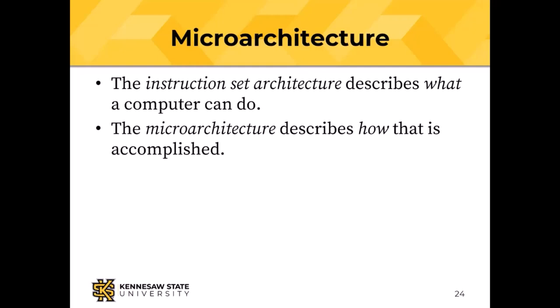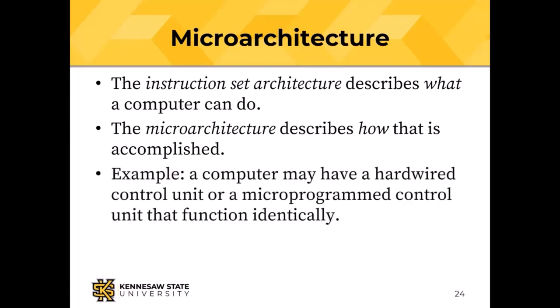Given a particular instruction set architecture, it is highly possible that it could be accomplished in more than one way. For example, there are two ways to design a control unit: one is hardwired — we build out of gates something that takes the bits of the operation code and generates the necessary control signals. The other way is a microprogrammed control unit, which is actually a sort of minimally programmable computer itself that generates the same control signals. Hardwired control units are both faster and more expensive than microprogrammed ones.